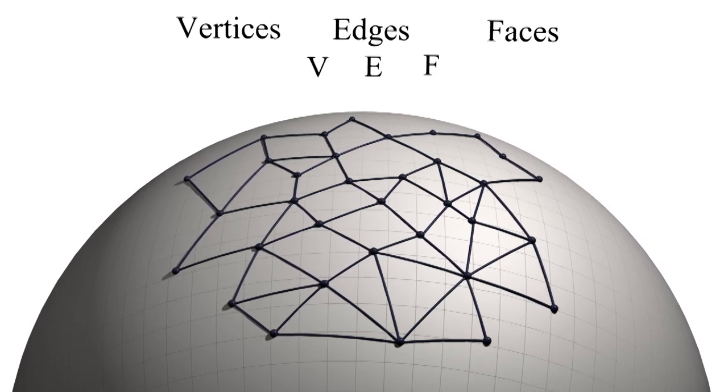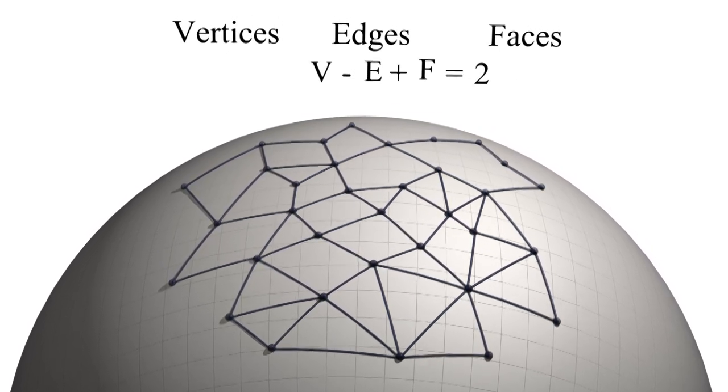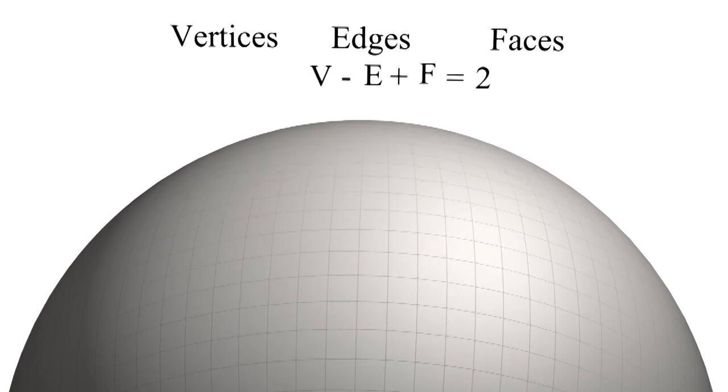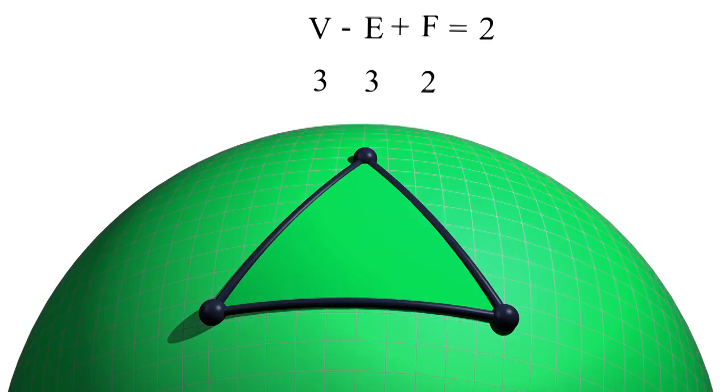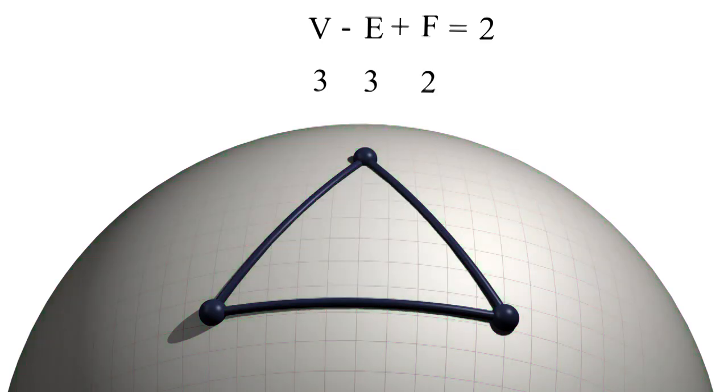This theorem says that V minus E plus F equals 2 for any connected graph on a sphere. For example, this triangle has three vertices, three edges, and two faces. So that's 3 minus 3 plus 2 equals 2.